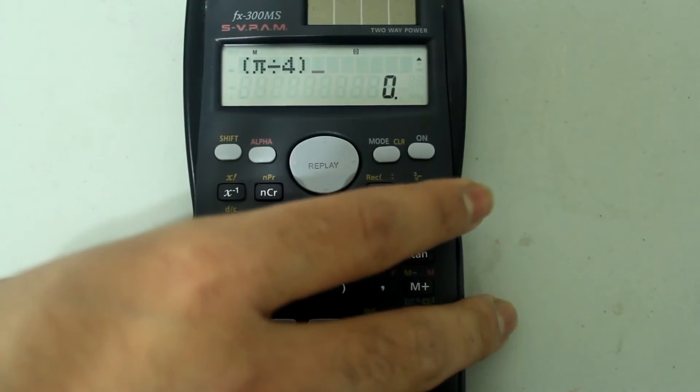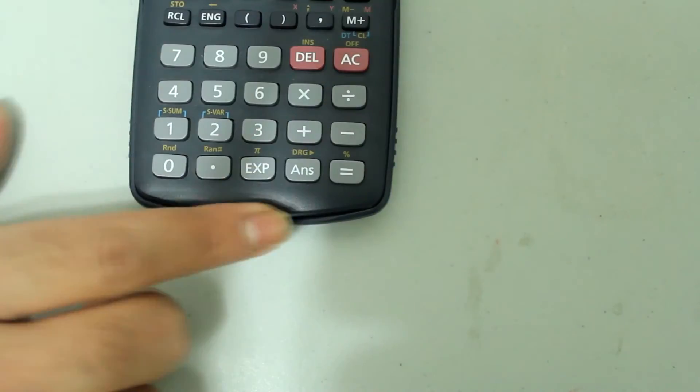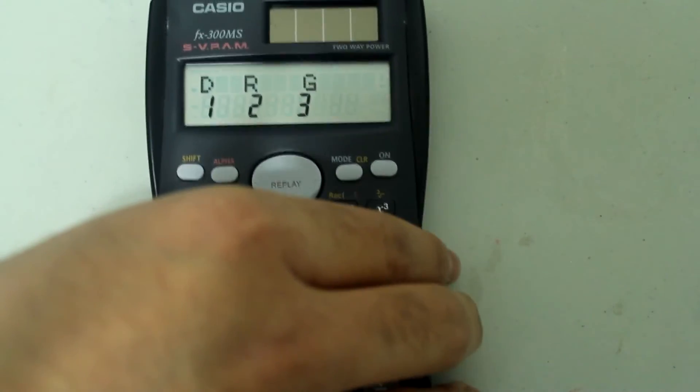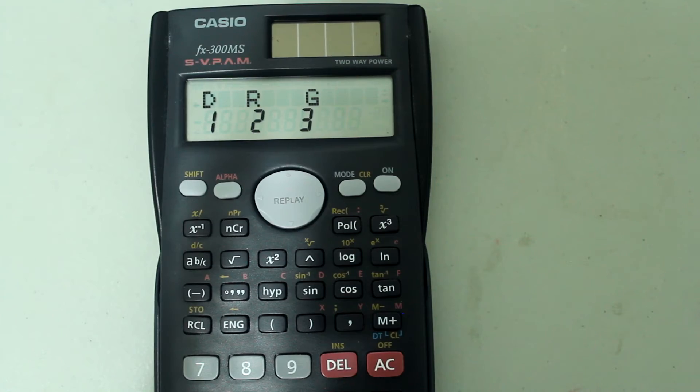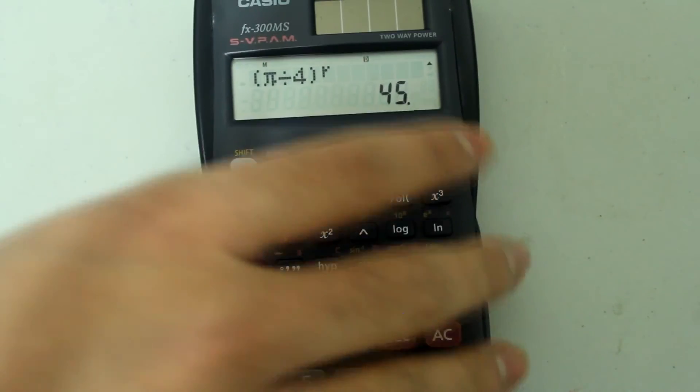This is what the entry looks like. Now press shift, and then this answer button, and now we want to tell the calculator that our entry is in radians, so we are going to press 2 on the number pad. This is what it looks like, there is a little r over here, once you press equals, we get 45 degrees.